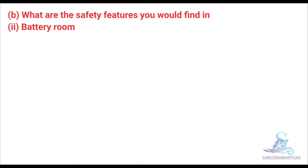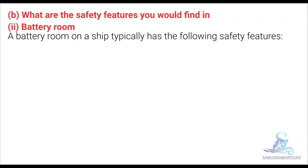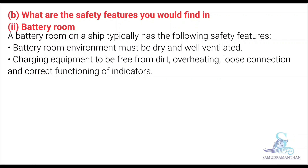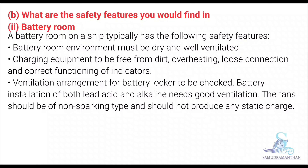Now we will discuss the safety features in the battery room. A battery room on a ship typically has the following safety features: the battery room environment must be dry and well ventilated; charging equipment must be free from dirt, overheating, loose connections, and indicators must function correctly; ventilation arrangement for battery lockers must be checked; battery installation for both lead acid and alkaline batteries requires good ventilation. The fans should be of the non-sparking type and should not produce any static charge.